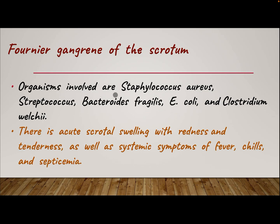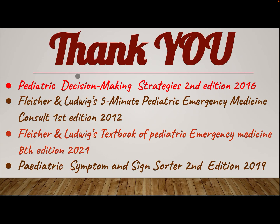Organisms involved in Fournier's gangrene include Staphylococcus aureus, Streptococcus, Bacteroides fragilis, E. coli, and Clostridium welchii. There is acute scrotal swelling with redness and tenderness, as well as systemic symptoms of fever, chills, and septicemia. Thank you for listening.